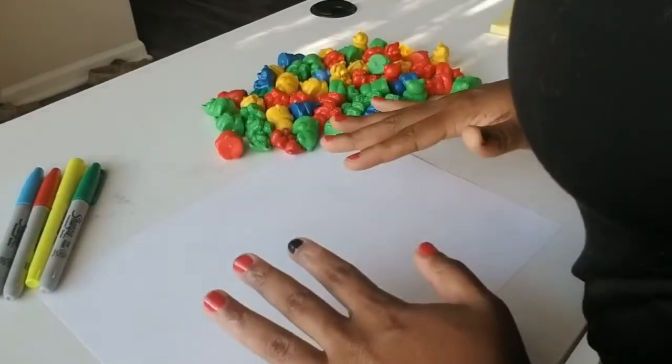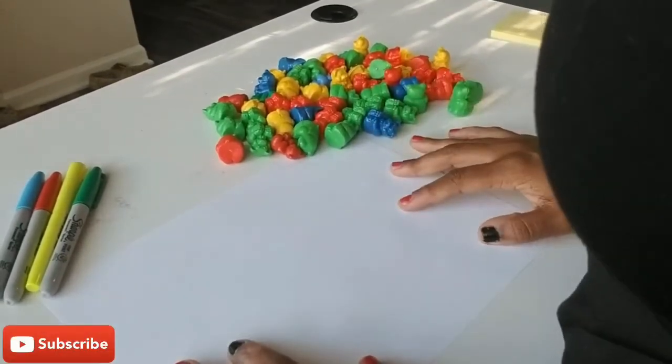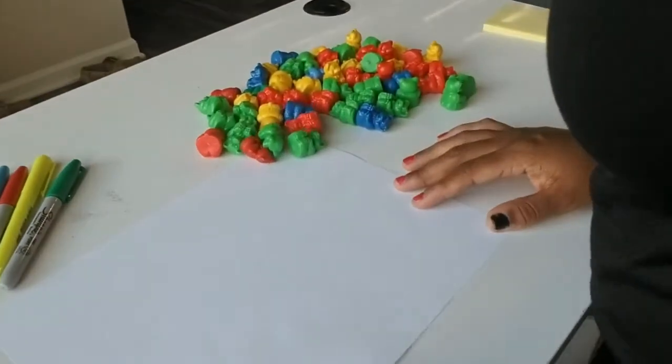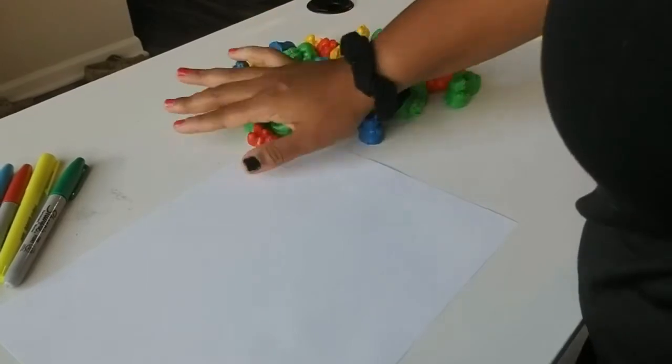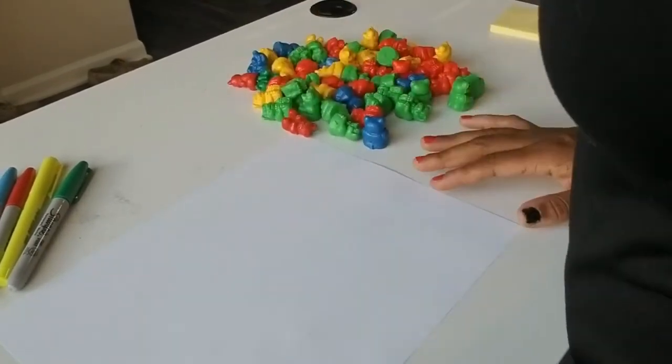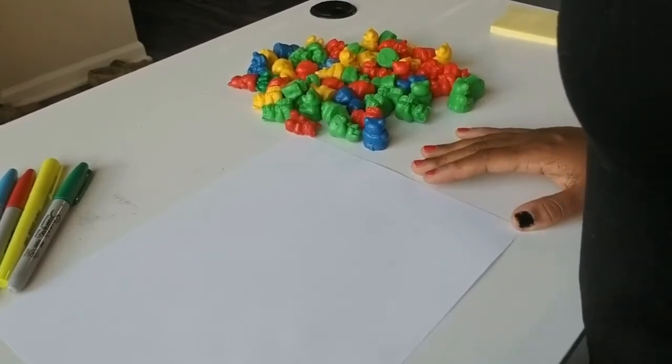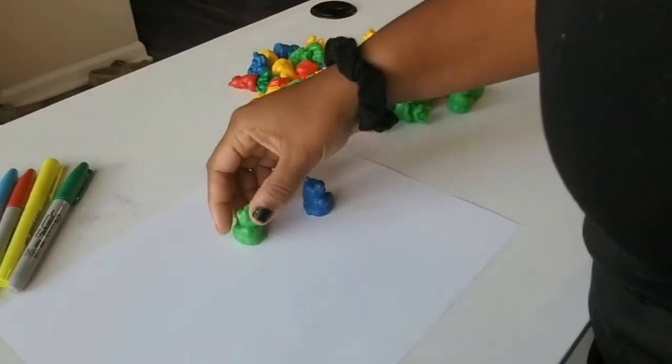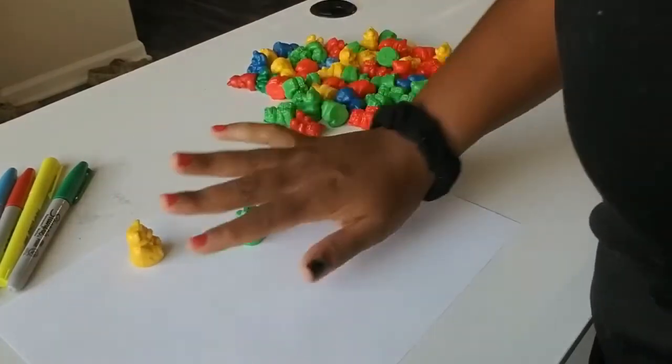Hello guys and welcome back to the Teacher Made channel where everything is made by a teacher. Today I have another simple activity for you with Sharpies, a piece of computer paper, and some counting bears. This is a simple math activity that you can do at home with your child. This will help them with not only counting, but also with their colors and sorting. So let's go ahead and get started.